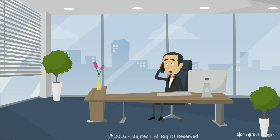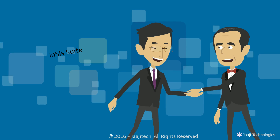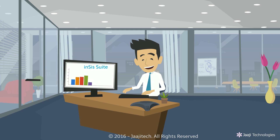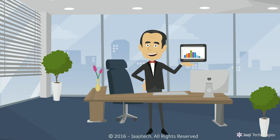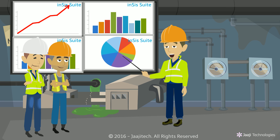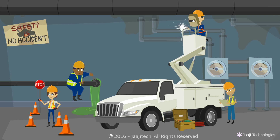Mr. Rajan ordered in CIS Suite and implemented it in his process plants. Now the information is everywhere. The technical team could quickly analyze and troubleshoot the problems. The plant key performance indicators are monitored, and the actions are taken swiftly to keep the plant overall performance at a high level.